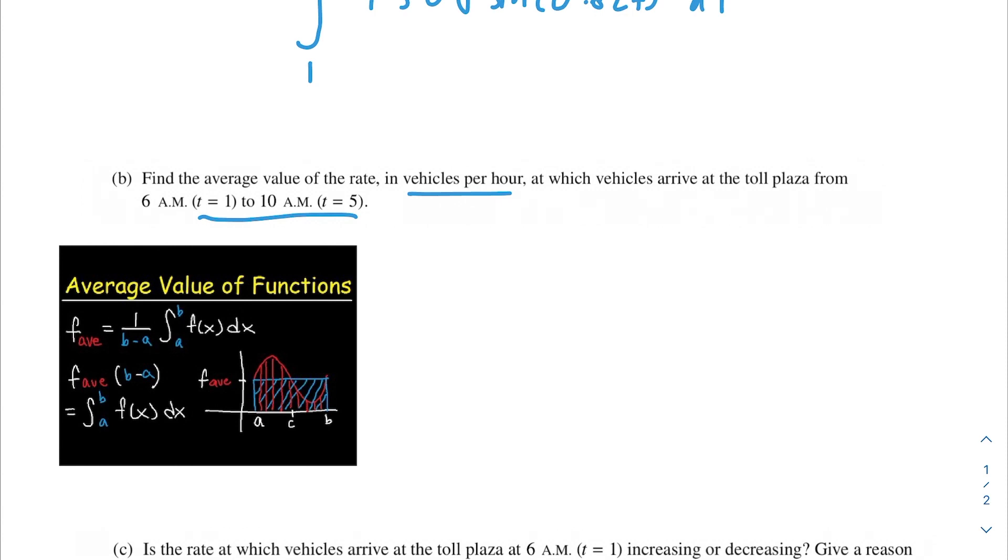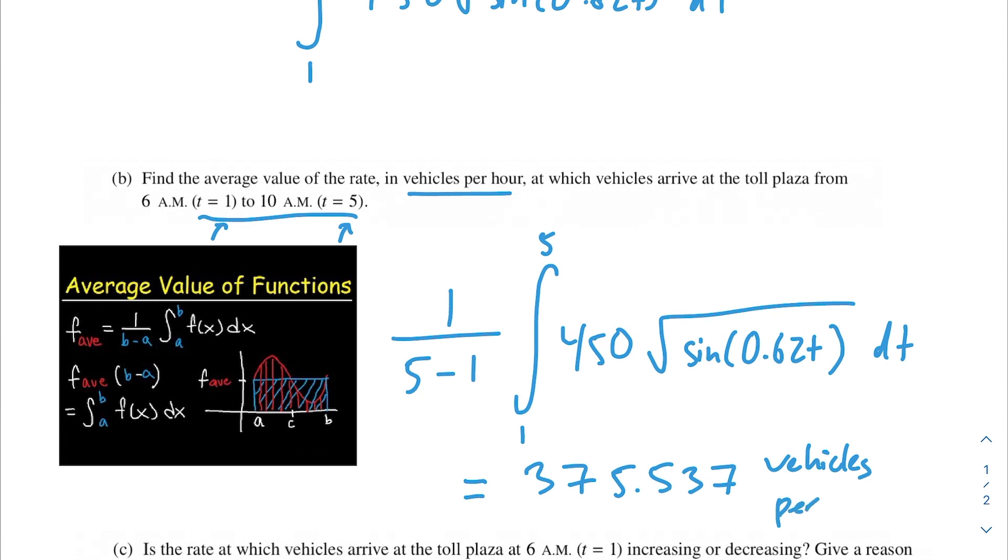If we set this up using the variables provided in the problem, it will look like 1 over 5 minus 1, then we take the integral from 1 to 5 of the rate, so that would be 450 sine 0.62t dt. Since this is a calculator problem, go ahead and plug this into your calculator. Make sure you're in radians mode. Do not do this by hand, you're just going to be wasting time. The average rate is going to be about 375.537 vehicles per hour.